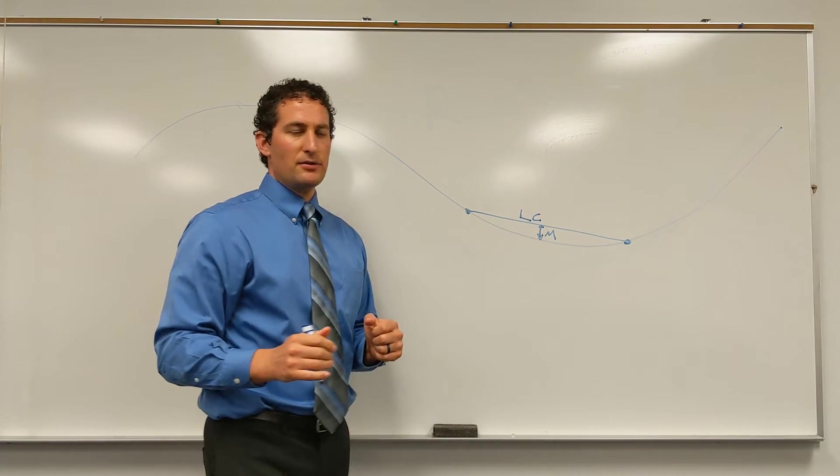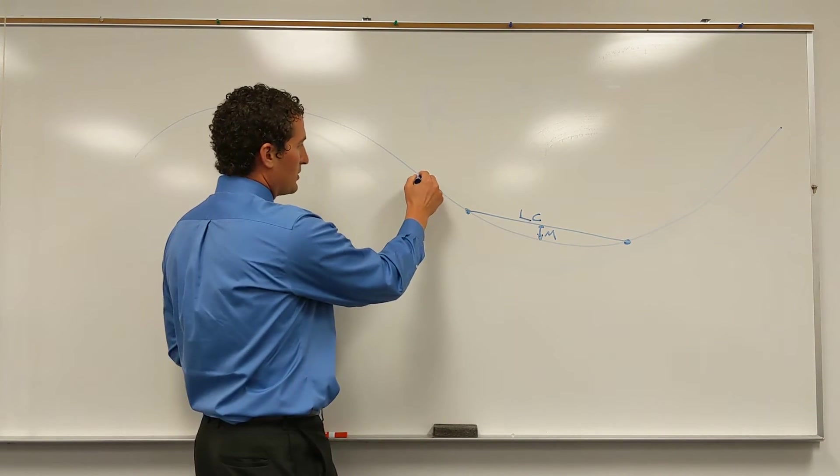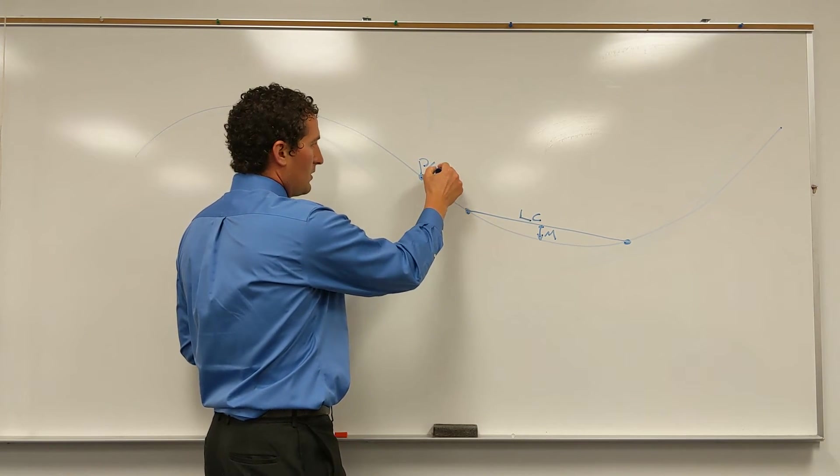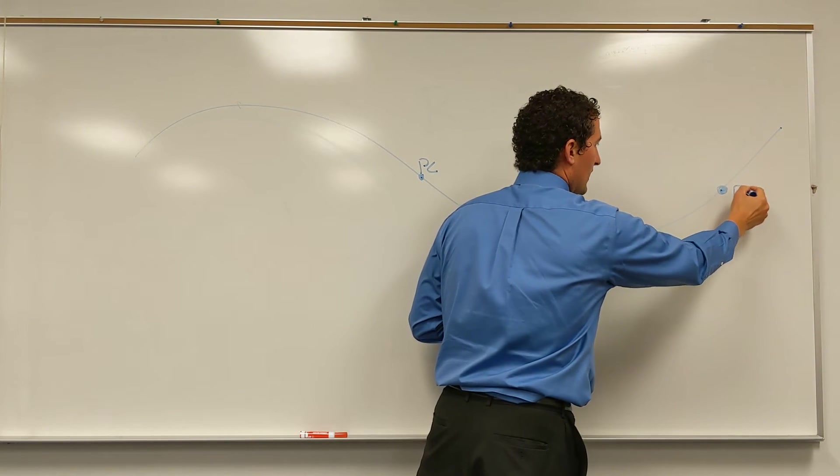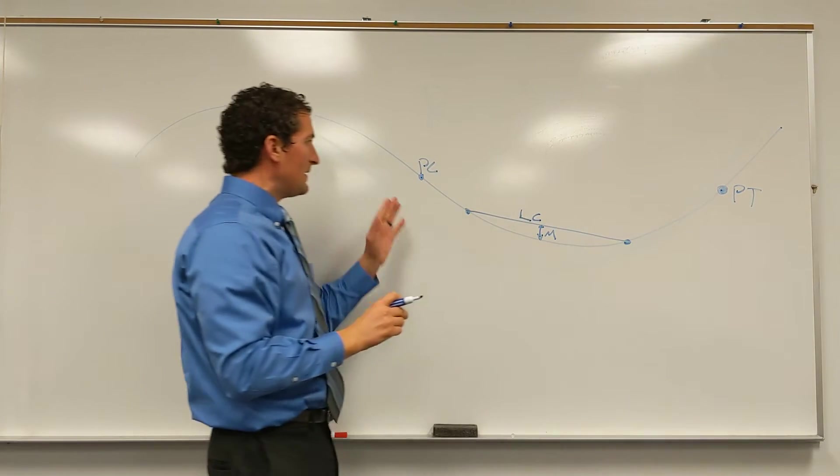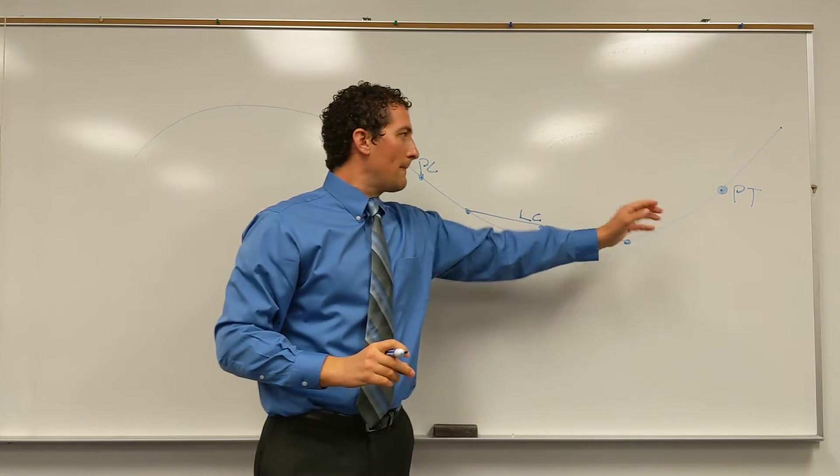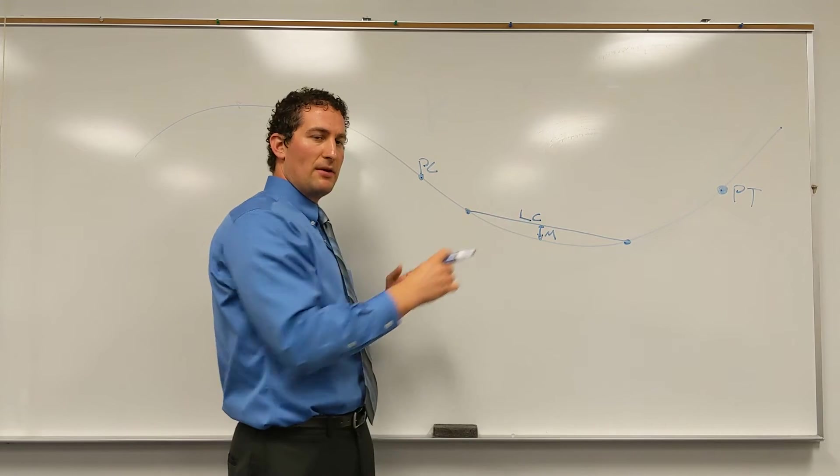These need to be within the bounds of the curve, so if we establish that our PC is here and our PT is here. PC is the point of curvature, PT is the point of tangency, those are the bounds of the curve.